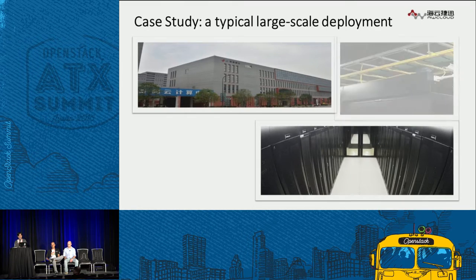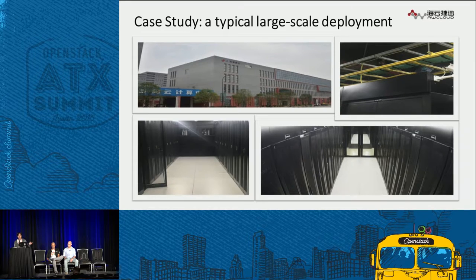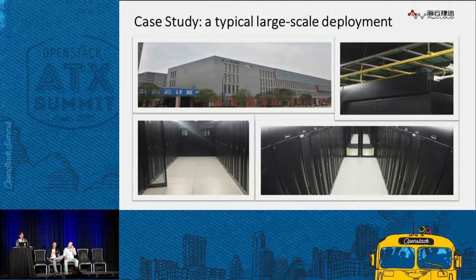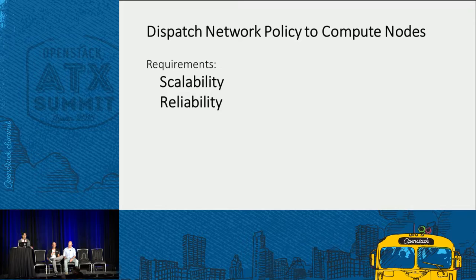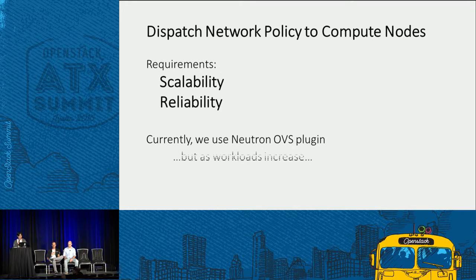Here are several pictures taken in and around the data centers. For us, we have several large-scale deployments, and in order to run these large OpenStack clouds successfully, we have requirements that each component in OpenStack installations is scalable and reliable. This is very important for us, especially for the networking part. Currently, we use the Neutron OVS plugin, but as workloads increase, we discovered several limitations in our deployments.